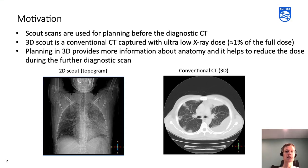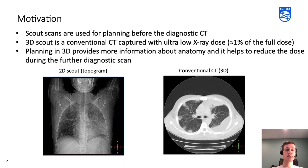Typical CT acquisition consists of two steps. The first is planning — it's the capturing of a 2D scout, or so-called topogram. You may see it on the left-hand side. Then the second step, based on the captured 2D scout, a radiologist sets all the parameters for the diagnostic scan, which is on the right side.